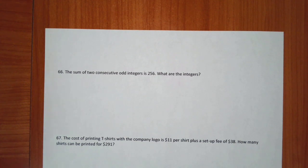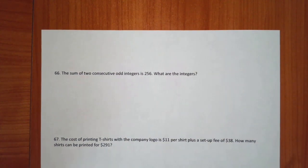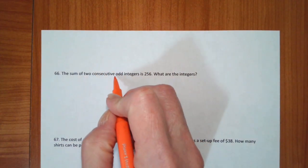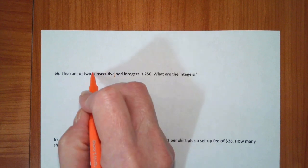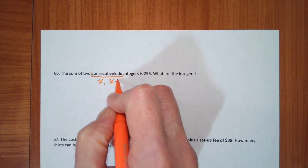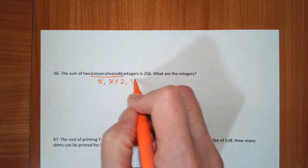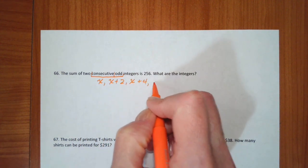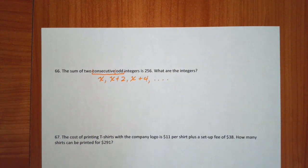Okay. The sum of two consecutive odd integers is 256. What are the integers? Okay. So I want to go back and think about what the consecutive odd integers are. Well, they are x, x plus 2, x plus 4, and so on and so forth.